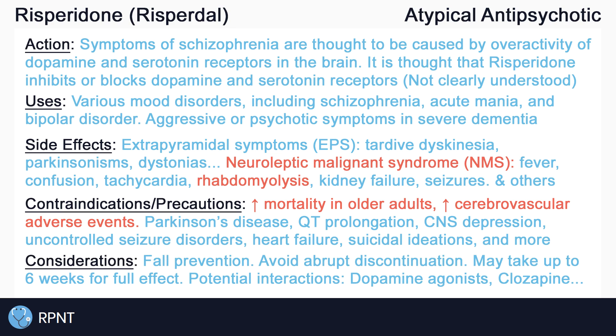Always remember to assess and monitor for side effects of Risperidone. Watch for signs and symptoms of EPS, NMS, and suicidal ideations. Ensure proper fall prevention is in place, especially for elderly clients. Avoid abrupt discontinuation of Risperidone, and keep in mind it may take up to six weeks for the full effect to kick in. Be aware of potential drug interactions, including dopaminergic agonists, clozapine, carbamazepine, and other CNS depressants like alcohol.